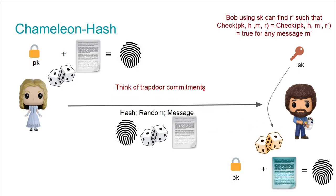She sends the fingerprint plus message plus randomness to Bob. What Bob can do now is find new randomness for some new document such that the fingerprint is still the same.